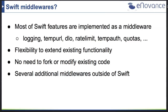Another great benefit is that if you want to add functionality, you don't need to fork the Swift code and modify existing Swift code. You can use the existing upstream release, develop your own middleware, and use both at the same time. Several people have already done this — there are existing third-party middlewares outside of Swift, for example for authentication and adding additional API layers, as well as companies that created their own private middlewares.